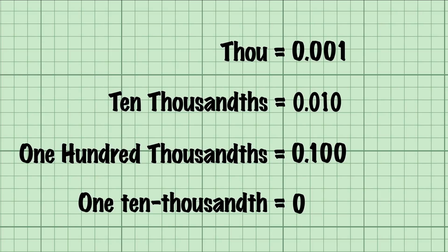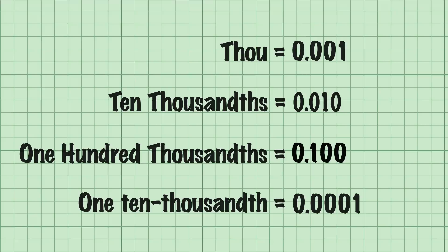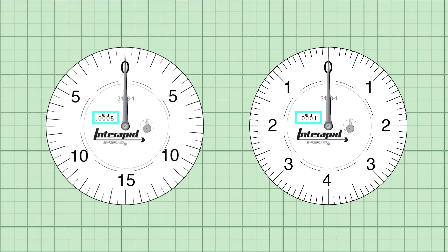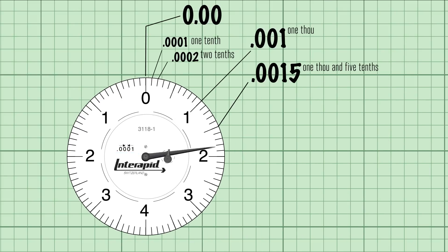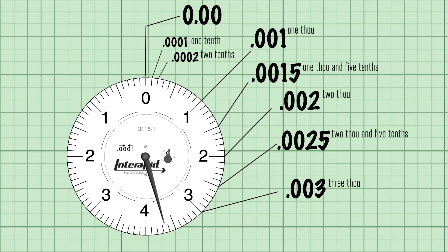Going the other way, a tenth or ten thousandth looks like this. Test indicators are commonly available with either five tenths or one tenth graduations. The dial of a one tenth indicator is broken up into units of a ten thousandth of an inch, or .0001. As the needle moves, each tick measures less than a hair's width of travel. It's that precision that makes these tools so valuable.